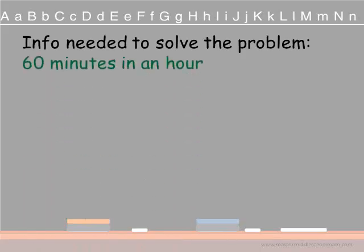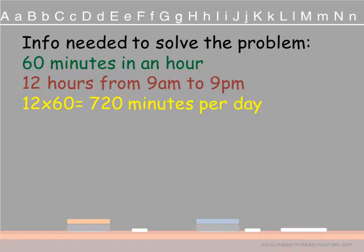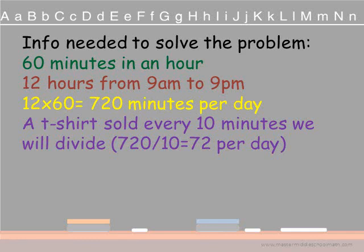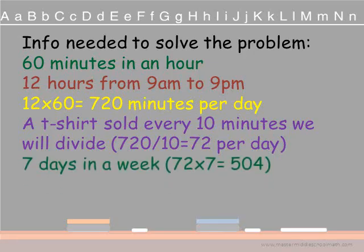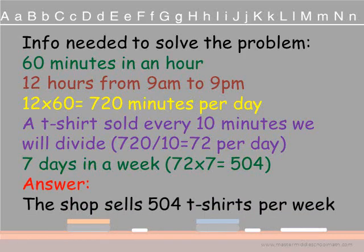Here is the information needed to solve our problem. There are 60 minutes in an hour, and there are 12 hours from 9am to 9pm. So we are going to multiply 12 times 60, which gives us 720 total minutes per day that the shop is open. A t-shirt sells every 10 minutes, so we are going to divide our total minutes by 10. 720 divided by 10 equals 72 per day. Are we finished? Well, no — the question said how many per week. So we need to know that there are 7 days in a week. 72 t-shirts per day times 7 days gives us 504 t-shirts. The answer is the shop sells 504 t-shirts per week.